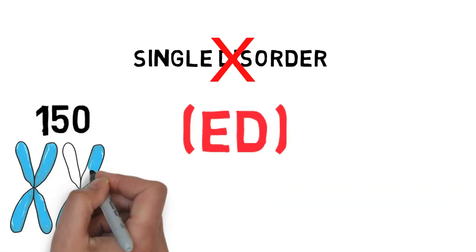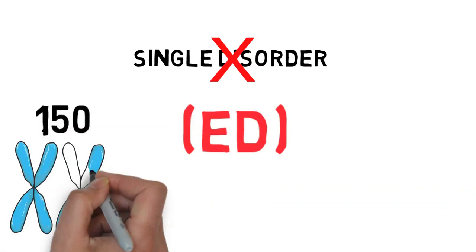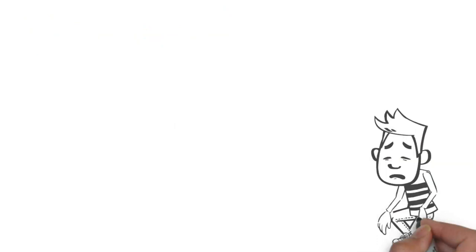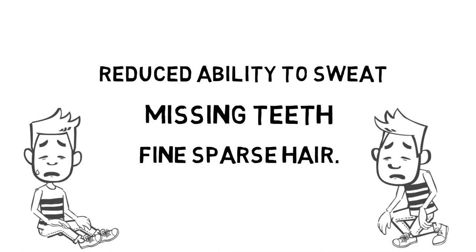ED is not a single disorder, but a group of over 150 closely related genetic conditions. A visit to a geneticist confirmed he had hypohydrotic ectodermal dysplasia, a rare genetic condition characterized by a reduced ability to sweat, missing teeth, and fine, sparse hair.